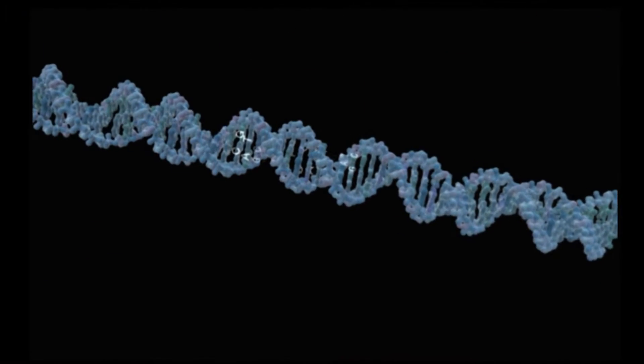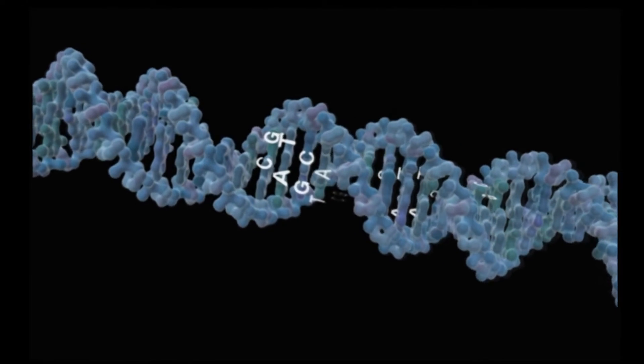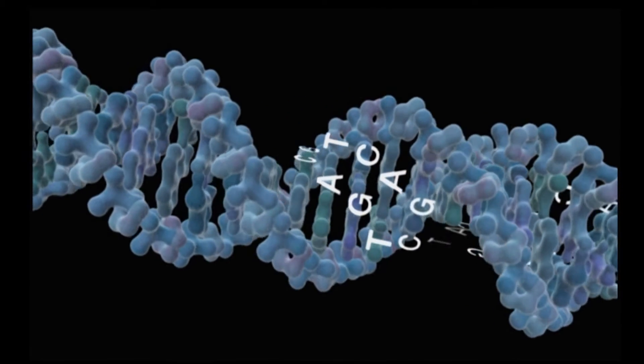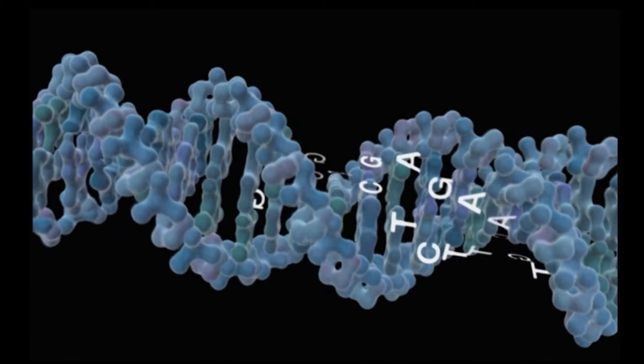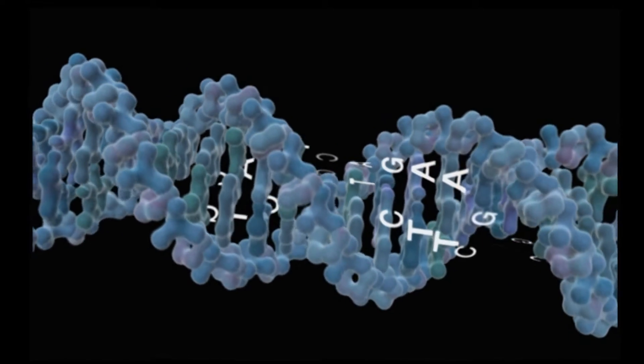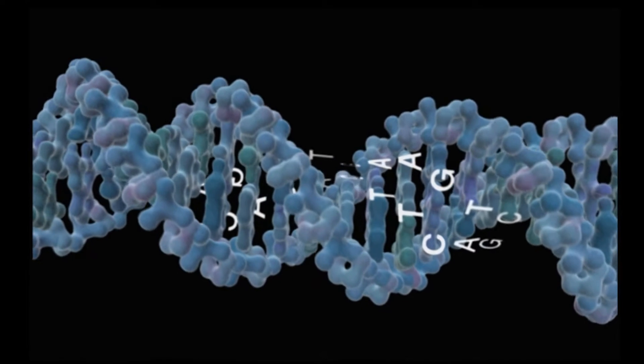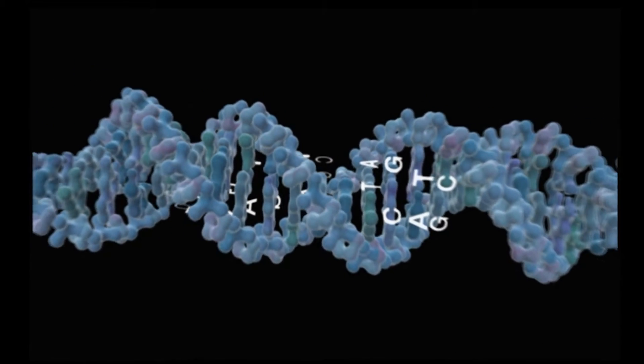In 1957, Francis Crick first proposed that chemicals called bases along the spine of the DNA molecule function as alphabetic characters in a written language or digital characters in machine code. This animation shows how this digital information directs protein synthesis.